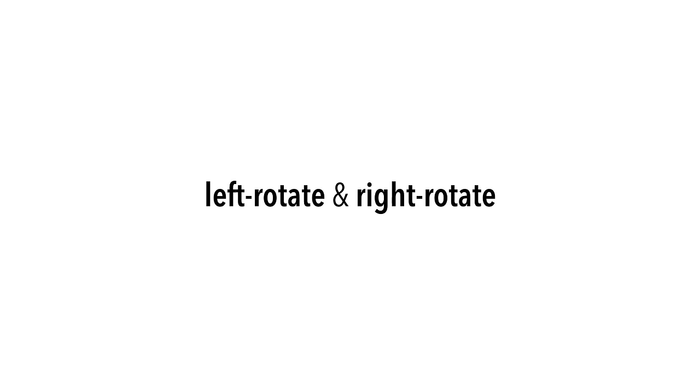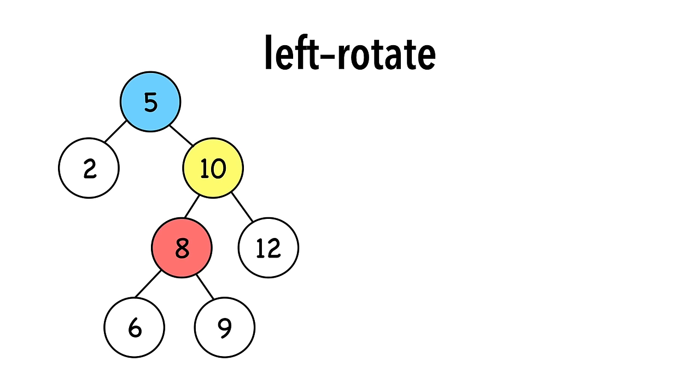There are two types of rotations: left and right. Let's first take a look at a left rotation using the following tree. For now, we won't color the nodes red or black. Instead, we'll color them so it makes the rotation easier to see. We're going to left rotate on node 5, the blue node.